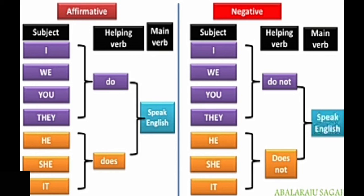One thing we must remember here: while using third person singular in simple present tense, we have to add -s or -es at the end of the root word. For example, the root verb is speak. For I, we, you, they — first person, second person and third person plural — it is different. But while using third person singular: he, she, it — we should use -s or -es at the end of the verb. He speaks English. She speaks English. It speaks English. The rule will be applicable for other verbs also.